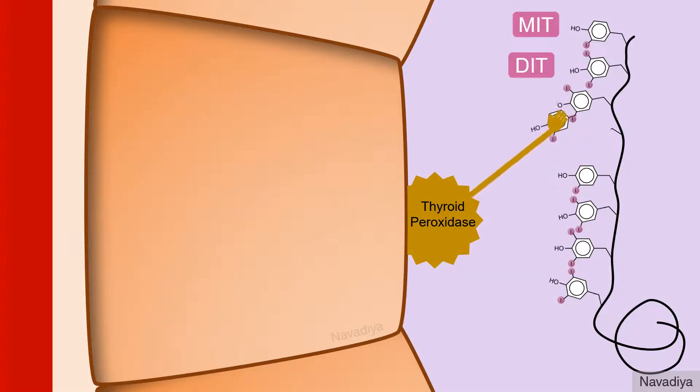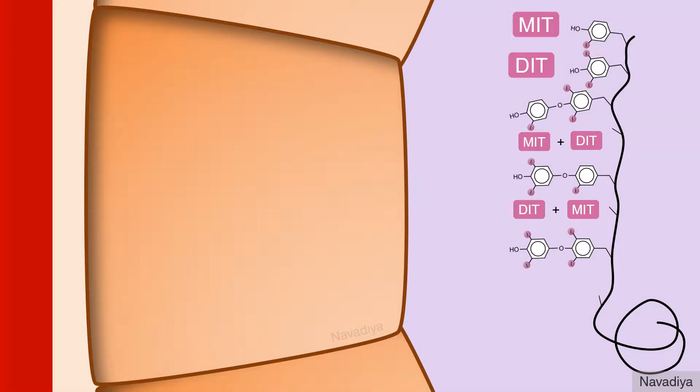Now enzyme catalyzes coupling of some of such iodinated tyrosines. If one mono and one diiodotyrosine combines it forms triiodothyronine. Here there are two possibilities. One is we can have one iodine on outer ring and two iodines on the inner ring. This is active triiodothyronine or T3.